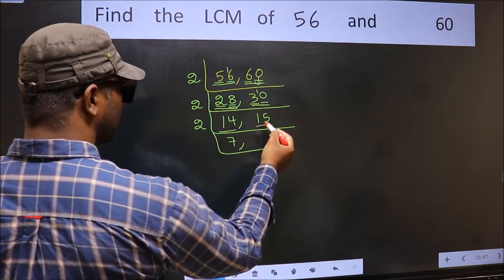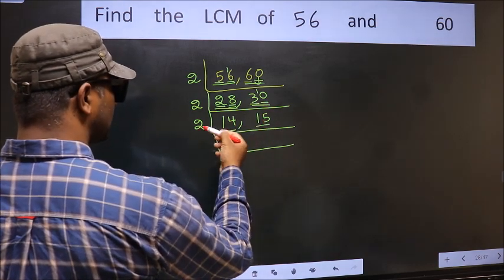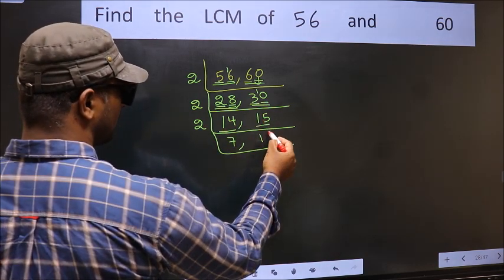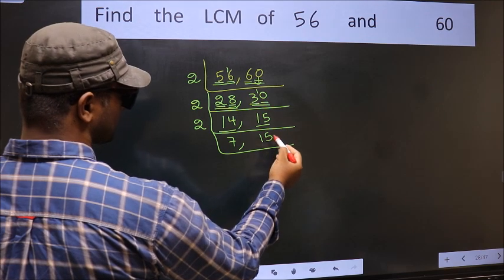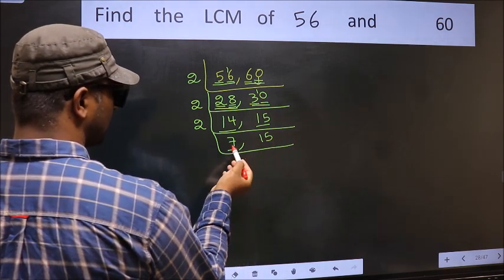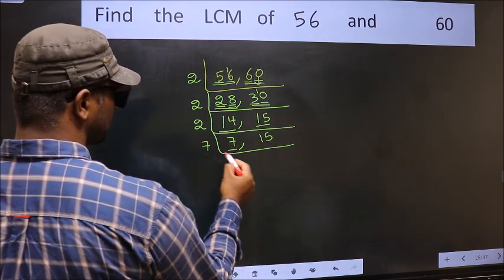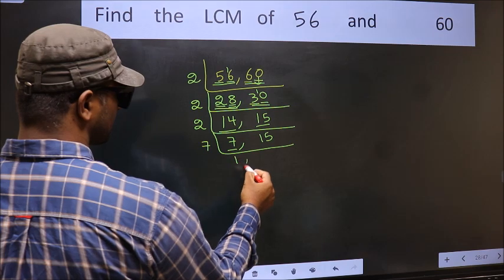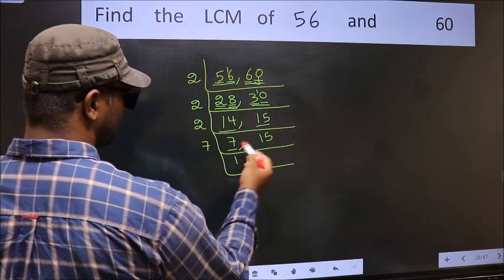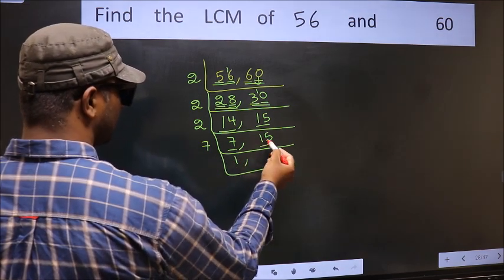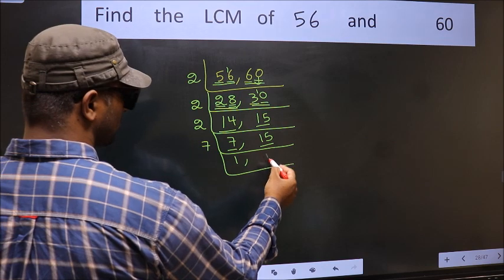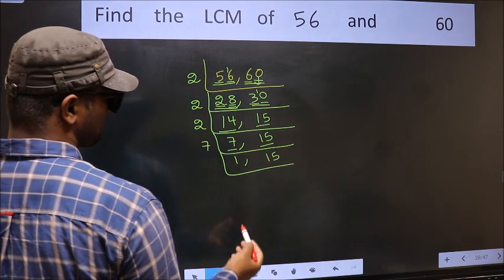15. The other number is 15 — not divisible by 2 — so we write it down as it is. Now here we have 7. 7 is a prime number, so 7 wants 7. The other number is 15 — not divisible by 7 — so you write it down as it is.